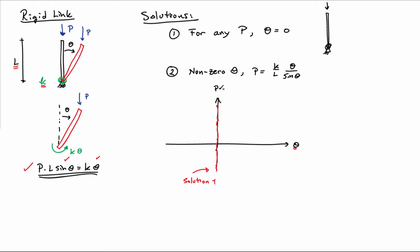Let's go ahead and make a plot of the solution. So we'll make a plot where we put theta on one axis and the load on the other axis. If I plot the first solution, that's any value of P theta equals zero. So that's just simply a straight line, the P axis here.